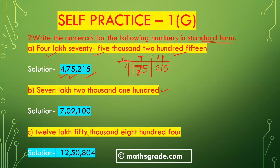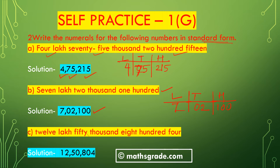Part (b): 7 lakh 2,100. In the Indian system of numeration we place 2 digits in the lakh place, 2 digits in the thousand place, and 3 digits in the hundred place. In the lakh place we have 7, in the thousand place there are no digits so we place 02, and in the hundred place we have 100. The number is 7,02,100.